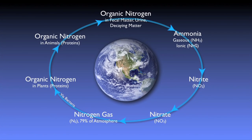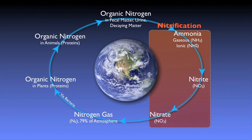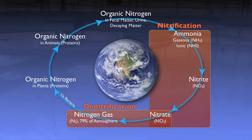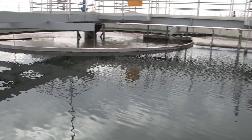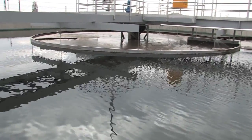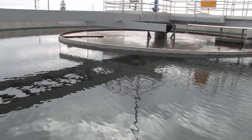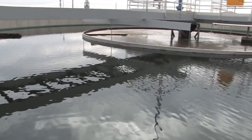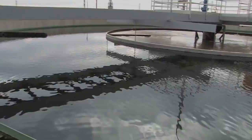In summary, a wastewater treatment plant helps nitrogen through the nitrogen cycle by optimizing conditions for nitrification and denitrification. By so doing, wastewater treatment plants help minimize the human impact on our fresh waterways and environment.